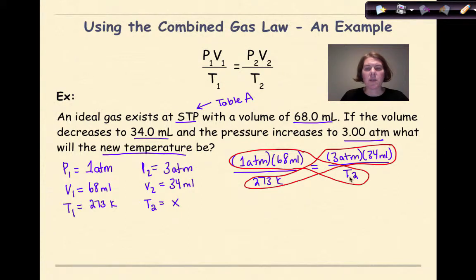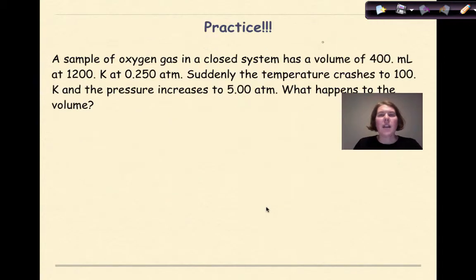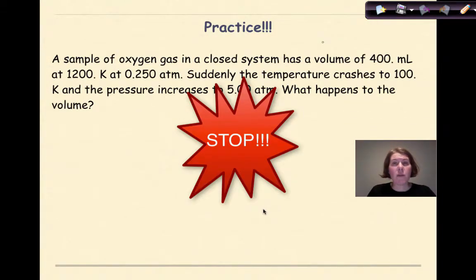So 1 times 68 times T2 is going to give me 68T2, the variable that I'm looking for. And 3 times 34 times 273 is going to give me 27,846. Then I'm going to divide both sides by 68. And my final T2 temperature will be 410 kelvin. And that is my final temperature. Now what I want you to do is stop, plug the known variables into your formula and solve for the unknown variable and see how you do.